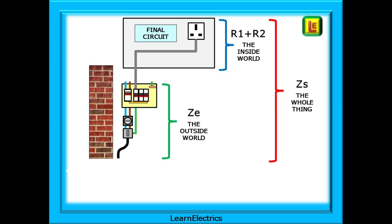This slide shows this. Ze is the outside world where the supply comes in. Added to this is R1 plus R2 for each circuit, the inside world, and we call this a final circuit and altogether this makes up Zs, the whole thing.